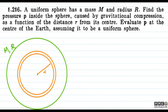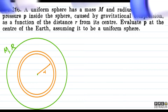To bacho, this question has given us that a uniform sphere has a mass capital M and radius capital R. And we are asked the pressure P inside the sphere, which is created because of the gravitational compression, as a function of the distance small r from the center.